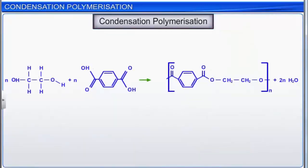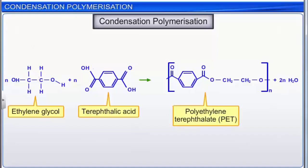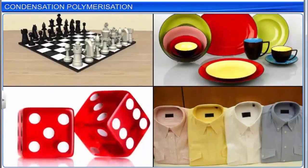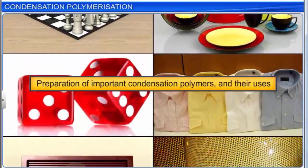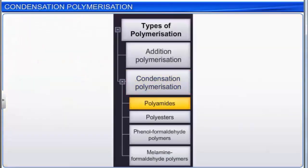The condensation reaction between ethylene glycol and terephthalic acid forms polyethylene terephthalate (PET), also known as Dacron. Note that in each step, when two different monomers combine, a water molecule is eliminated. Important condensation polymers include polyamides, polyesters, phenol formaldehyde polymers, and melamine formaldehyde polymers.